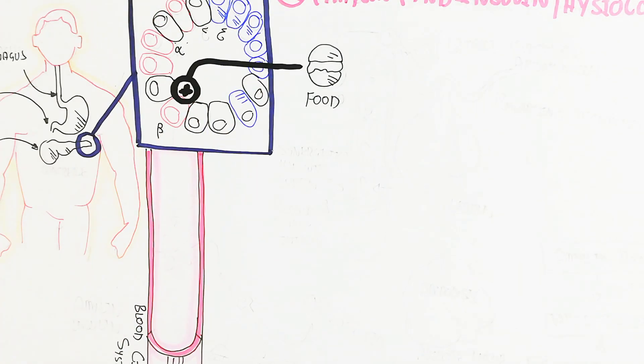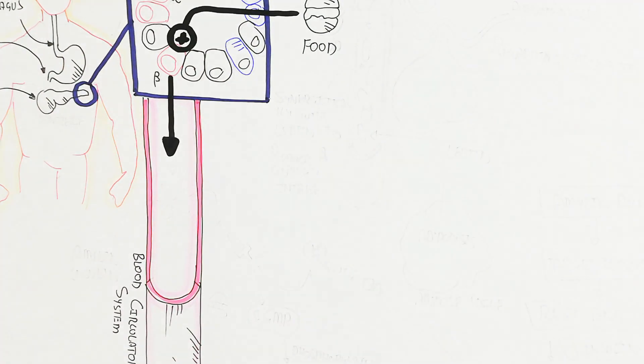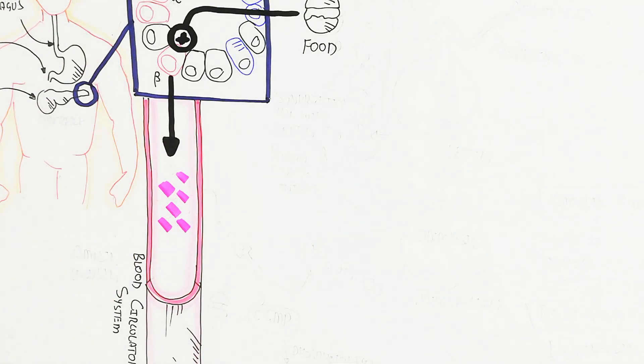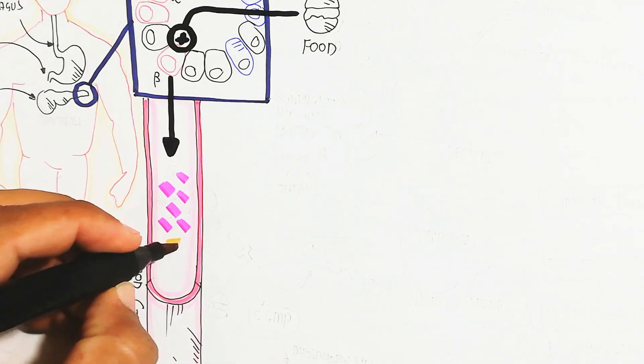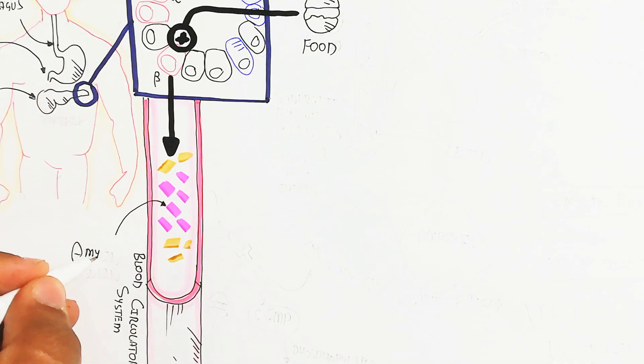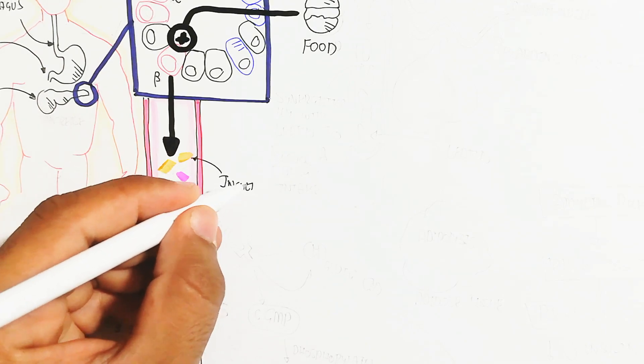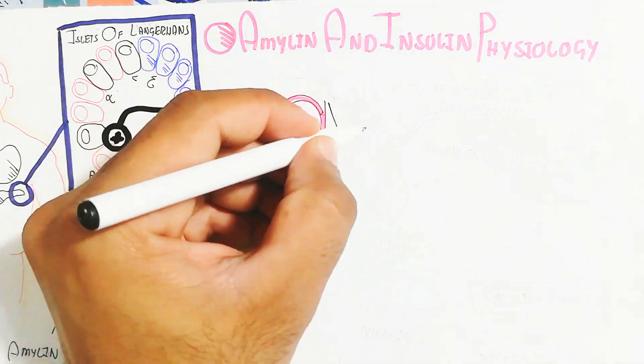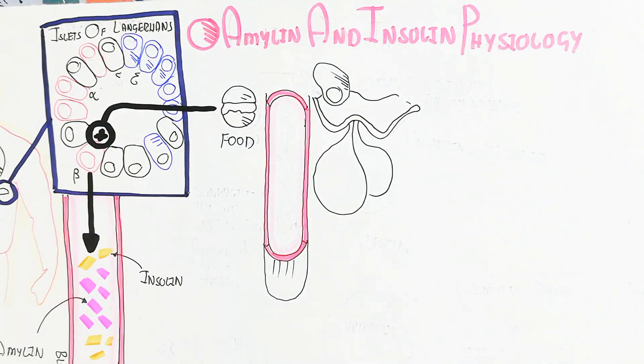After food absorption into the blood circulatory system, amylin works differently than insulin. Amylin will combine synergistically with leptin.